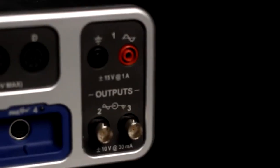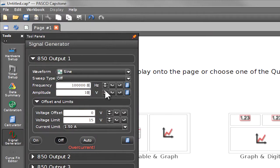The 850 has not one, but three outputs. The first is a power amplifier, and the power amplifier can go up to an amazing 15 watts. This makes it as capable as most stand-alone power amplifiers.